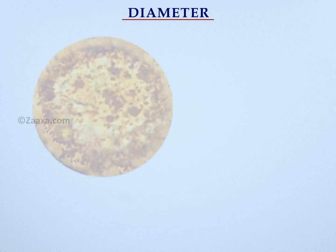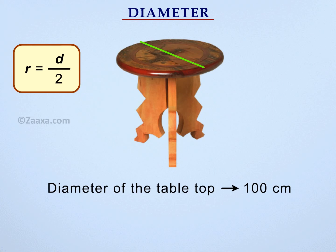Similarly, if the diameter of a round table is 100 cm, we can easily find its radius by dividing the diameter by 2.